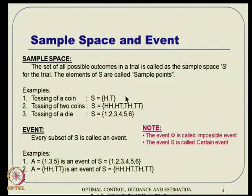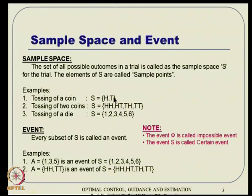The sample space is defined as the set of all possible outcomes in a trial; the elements are also called sample points. For example, if you toss a coin once, the outcome is either head or tail — head is a sample point and tail is a sample point, while the sample space contains either all heads or all tails. If you toss two coins, there are four possibilities: head-head, head-tail, tail-head, or tail-tail. Each of these combinations is a sample point, and the total set S is the sample space.